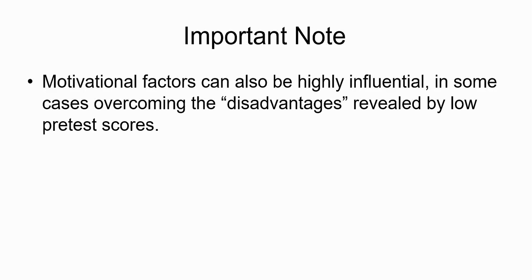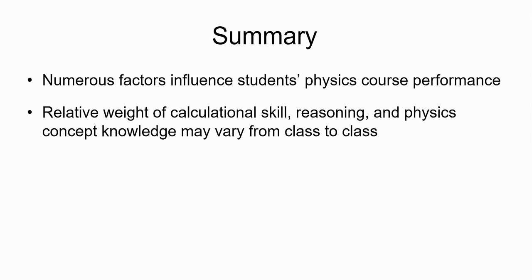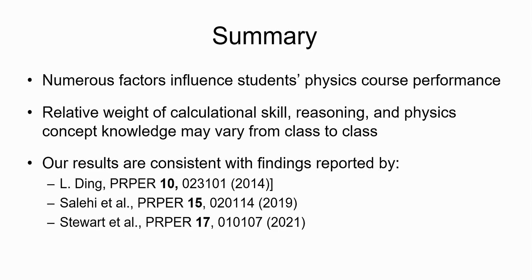I've left out motivational factors — they are significant, I just don't have time to cover them. To summarize: there are many factors that influence physics students' course performance. The relative weight of calculational skill, reasoning skill, and physics concept knowledge varies from course to course depending on the nature of the course. Our results are very consistent with other things in the literature, including some work that Eric has done.